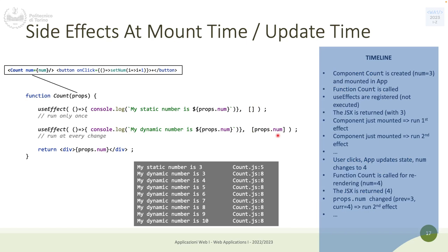The timeline is: the component is created and mounted, the function component is called, both useEffects are registered but not executed, the JSX is returned, the DOM is updated, then both effects are called. After that, when you click the button the state changes and only the second useEffect is called. If you refresh the page you unmount and remount the component and start from the beginning.